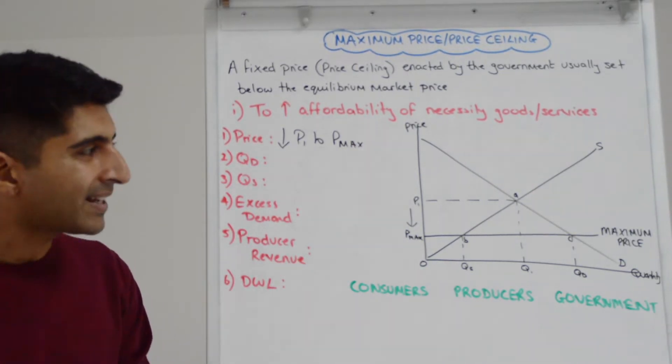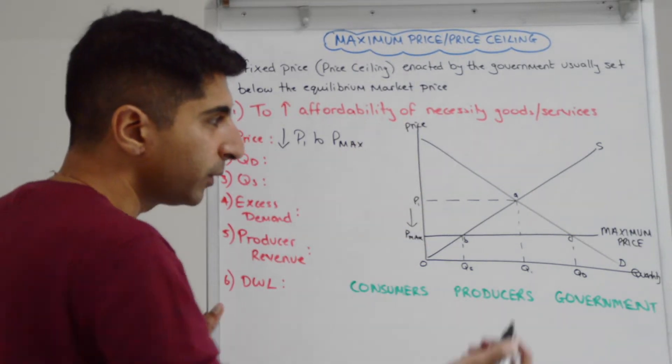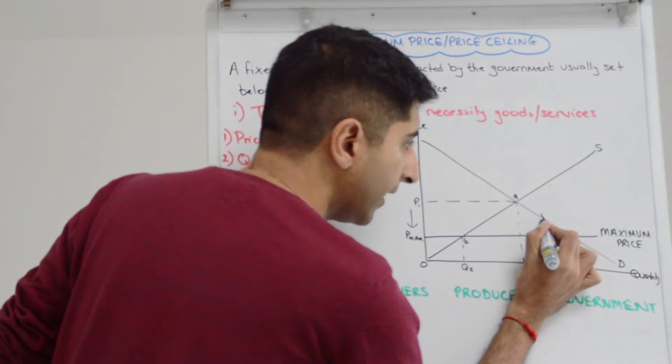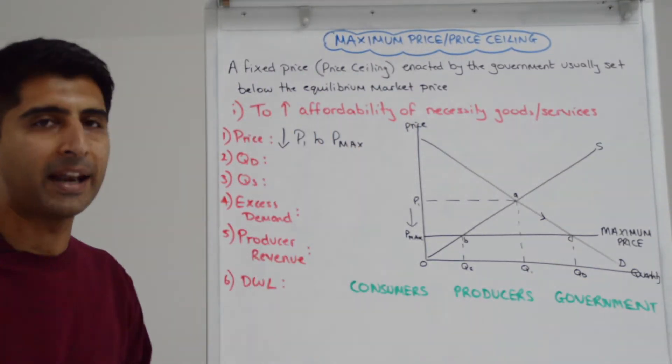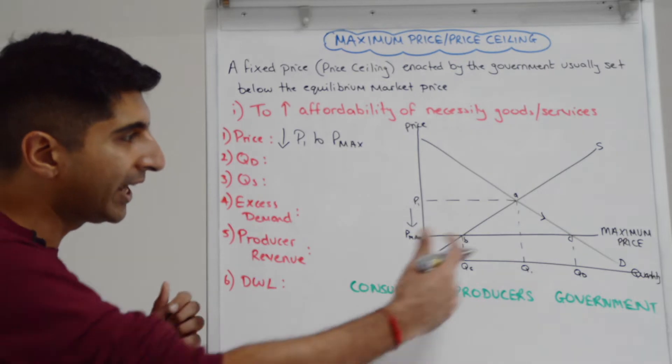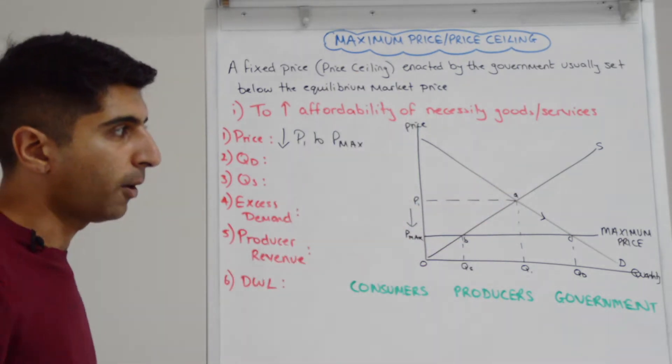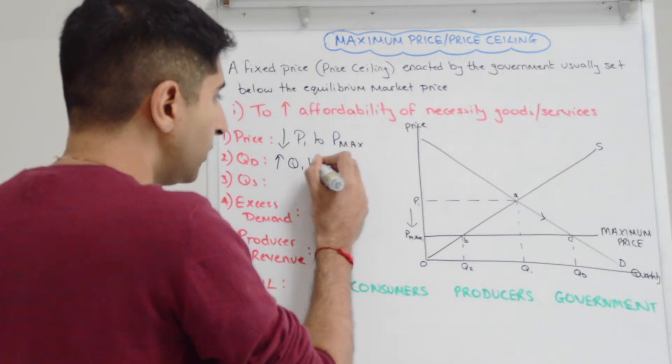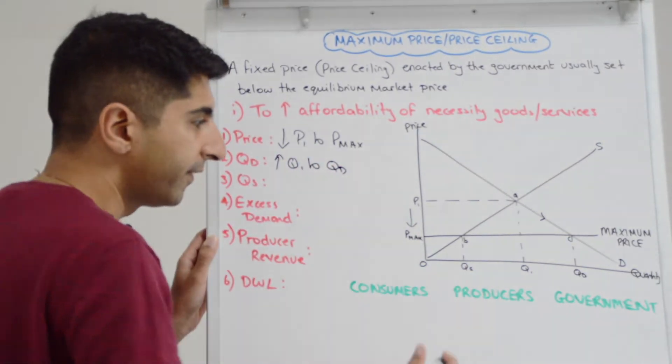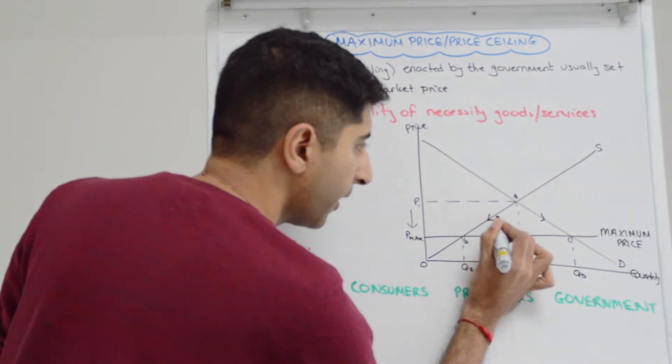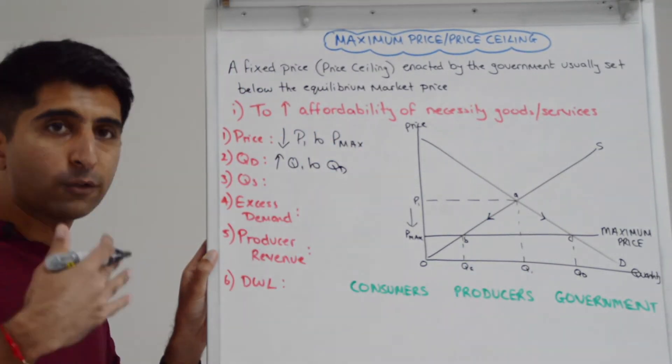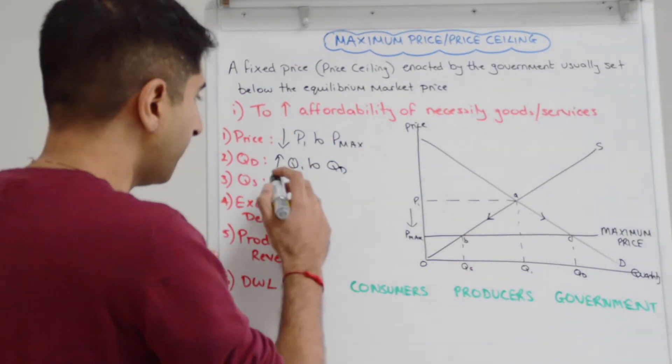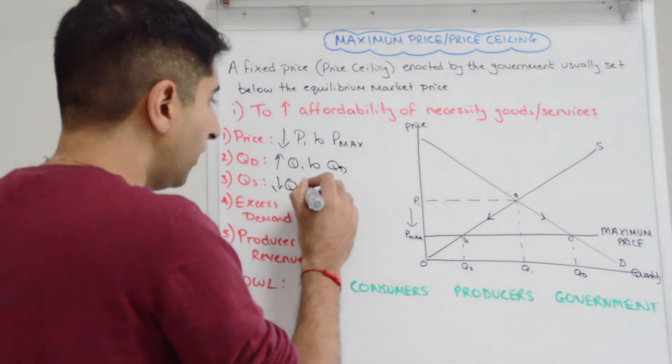But look what's happened to demand and supply. Go to demand first, we can see at a lower price there is now an expansion or an extension of demand. Naturally more consumers are willing and able to buy whether it's rented accommodation or basic groceries. So quantity demanded has gone up from Q1 to QD. But there is a contraction of suppliers. Prices are lower, producers are less willing and able to produce. So suppliers come down from Q1 to QS.